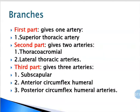Coming to the number of branches given by the different parts: the first part gives one artery — the superior thoracic artery. The second part gives two arteries — the thoracoacromial and lateral thoracic arteries. The third part gives three arteries — the subscapular, anterior circumflex humeral, and posterior circumflex humeral arteries.